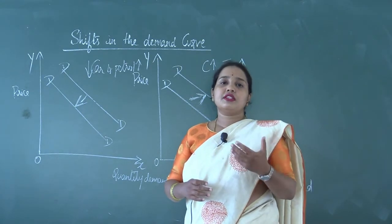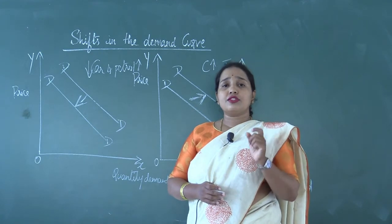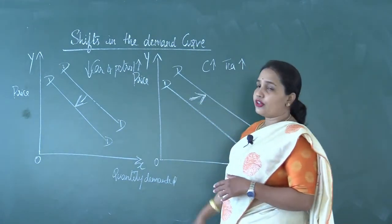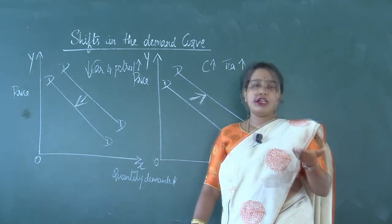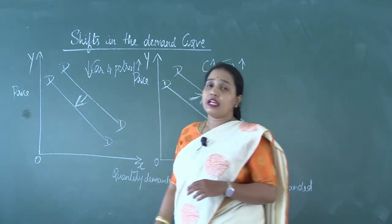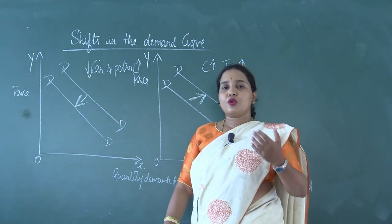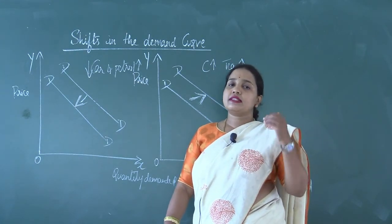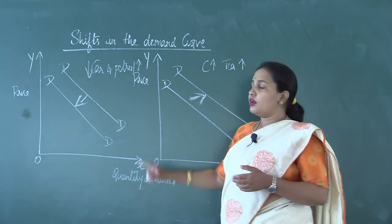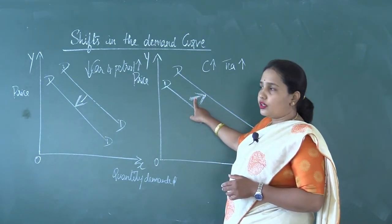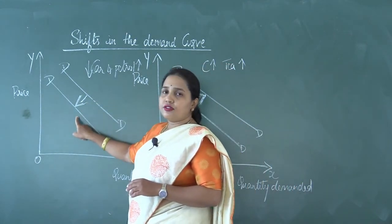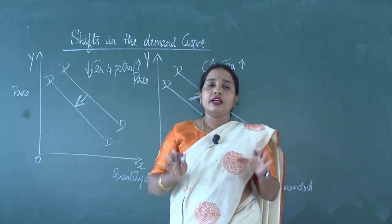Taking the last and most important determinant — taste and preferences of the consumer — the demand curve also shifts due to changes in the consumer's taste and preferences. If the consumer's preferences are in favor of a particular good, the demand curve shifts rightward. If the consumer's preferences are unfavorable towards a product, the demand curve shifts leftward. For example, people prefer to have more ice creams and cold drinks during summer. Therefore, during that season, consumer preferences towards cold drinks and ice cream are higher, and the demand curve shifts rightward. During winter, consumer preferences towards ice cream and cold drinks are unfavorable, and the demand curve shifts leftward.